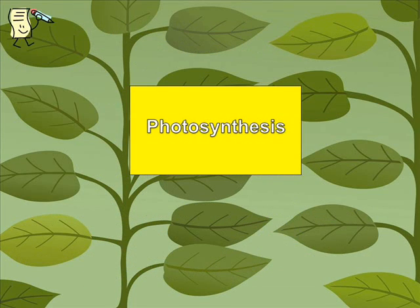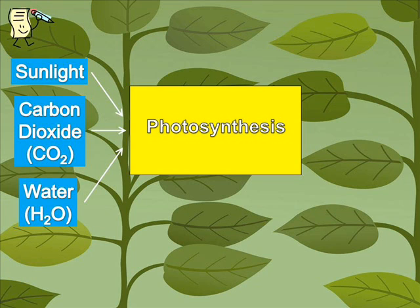Let's look now at how the process of photosynthesis works. Photosynthesis requires three things to work — three inputs into the process. First, it requires sunlight. It also requires carbon dioxide, which we also call CO2. The third thing that photosynthesis needs is water, or H2O.